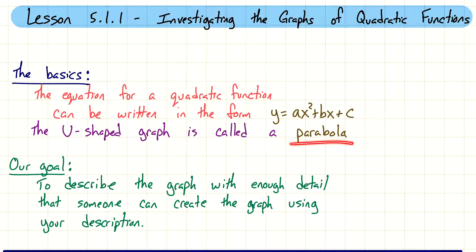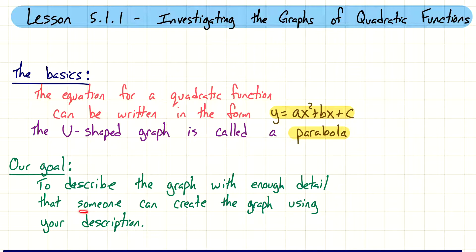This is what we call a parabola. So knowing the equation and that it's a parabola are key things to know. Our goal in this lesson and overall this chapter is to be able to describe the graph with enough detail — give enough information — that if you give that to someone else, they can create the same graph based off of your description. So if I just give you a lot of information about the graph without even giving you the equation, would you be able to graph it? Ideally, you want to be able to.